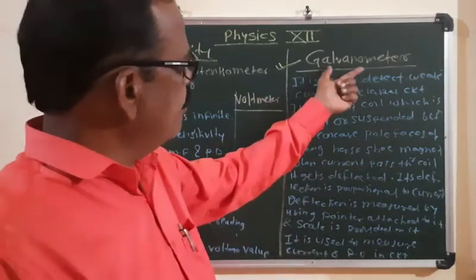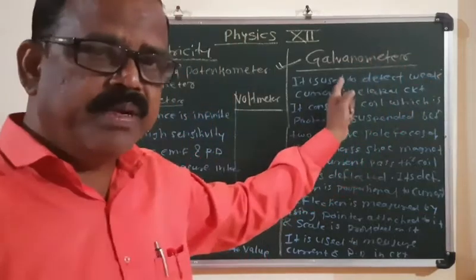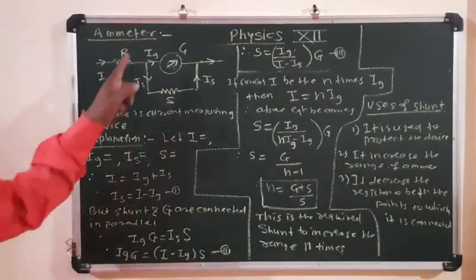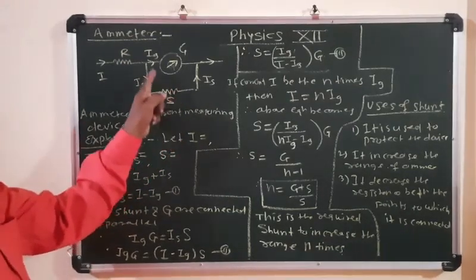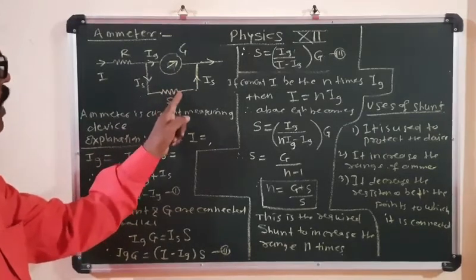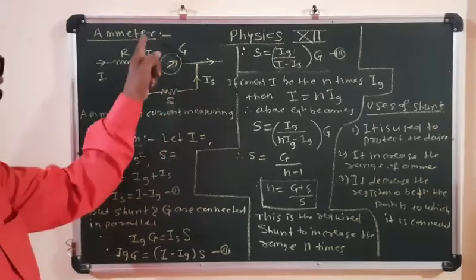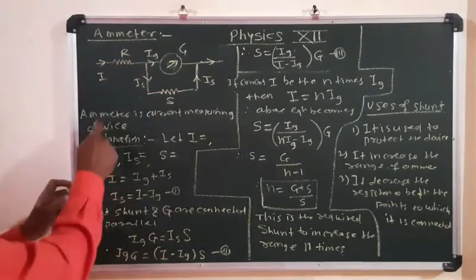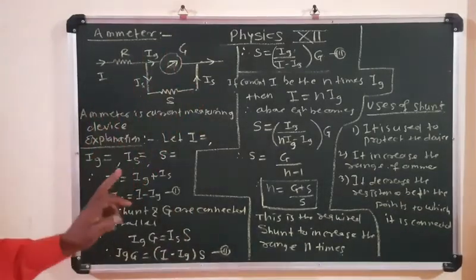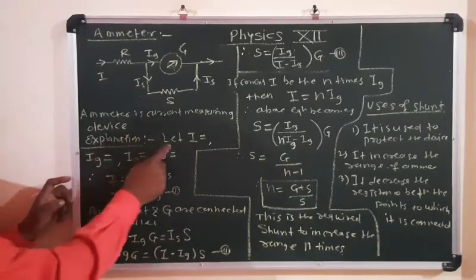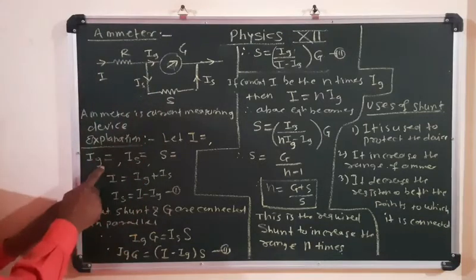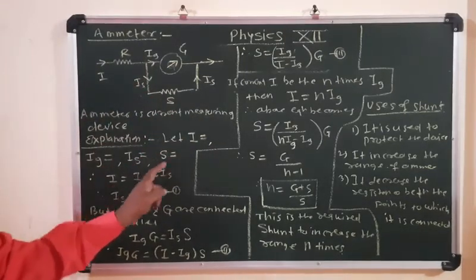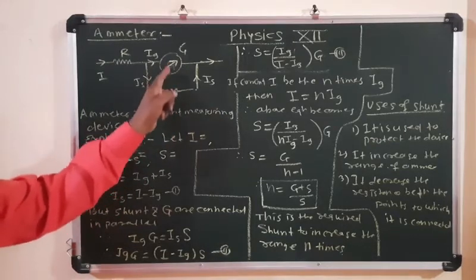Now we will explain how the galvanometer is converted into an ammeter and how it is converted into a voltmeter. This is the electrical circuit for the conversion of galvanometer into an ammeter. An ammeter is a current measuring device used to measure the current.